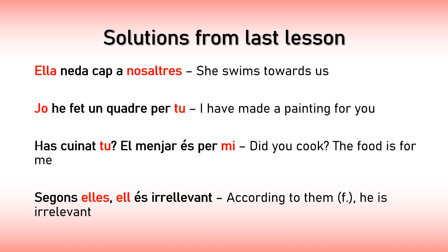Ella n'he de cap a nosaltres. Jo he fet un quadre per tu. I put 'jo' but I could have said just 'he fet un quadre per tu', but I thought it was nice to point out who the subject is sometimes. Has cuinat tu? El menjar és per mi. Segons elles, ell és irrelevant.